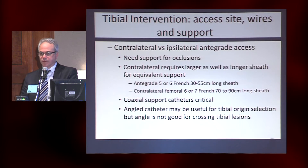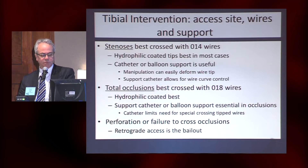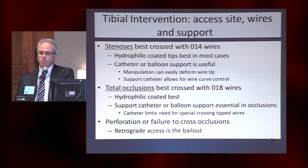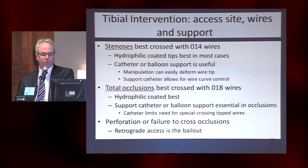An angled catheter is good to get selected tibials, but it's not what you want to advance down into the tibial — it needs to be a straight catheter generally to get the best results in crossing. Stenoses are best crossed with an 014 wire, and you must have a support catheter behind it, because the wires get deformed easily and you really lose tip control quickly after one or two deformations of an 014 wire tip.